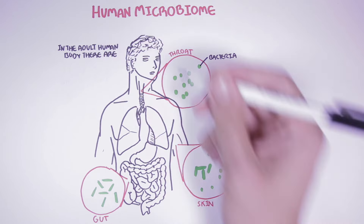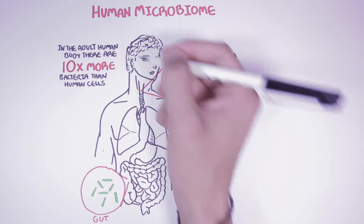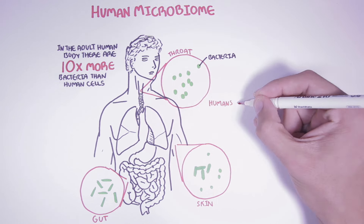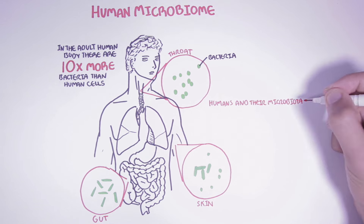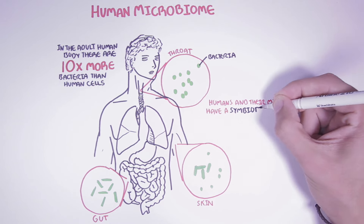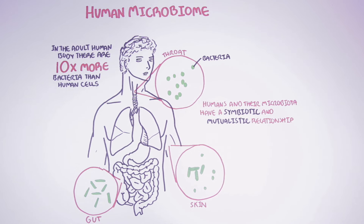In a healthy adult human body, there are approximately 10 times more bacteria than there are human cells. Humans and their microbiota — which is bacteria — have a symbiotic and mutualistic relationship, which means that us humans and the bacteria work together, benefit off each other, and depend on each other for survival.